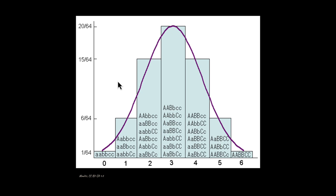Something else to remember about polygenic inheritance is that it is not only the genes that control the expression of these traits — the environment also plays a huge role. For example, with human skin color, the exposure to sunlight plays a huge role in how the trait is expressed.